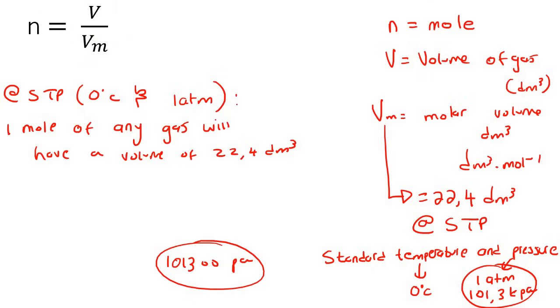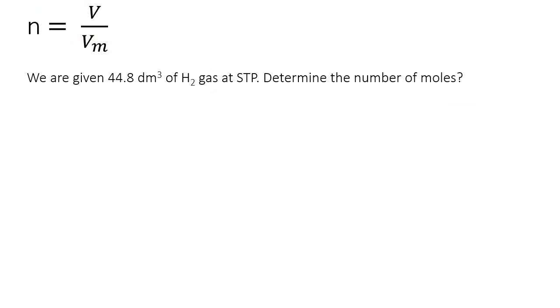Now let's actually use this formula, and you'll see that it's pretty easy. This question says that we are given 44.8 decimeters cubed of hydrogen gas at STP. Remember that stands for standard temperature and pressure. Determine the number of moles.